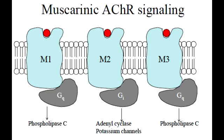The G-protein class of M3 receptors is GQ. The effects of M3 receptor stimulation include smooth muscle contraction, increased exocrine gland secretion in the lacrimal glands and gastric acid, increased gut peristalsis, increased bladder contraction, bronchoconstriction, increased pupillary sphincter muscle contraction — which is miosis — and ciliary muscle contraction, which causes accommodation.